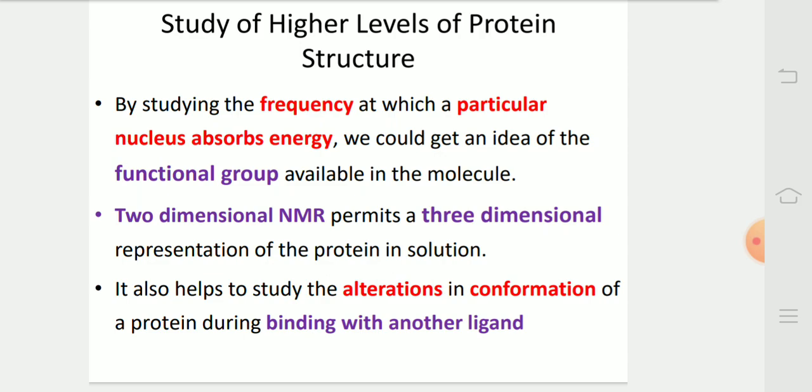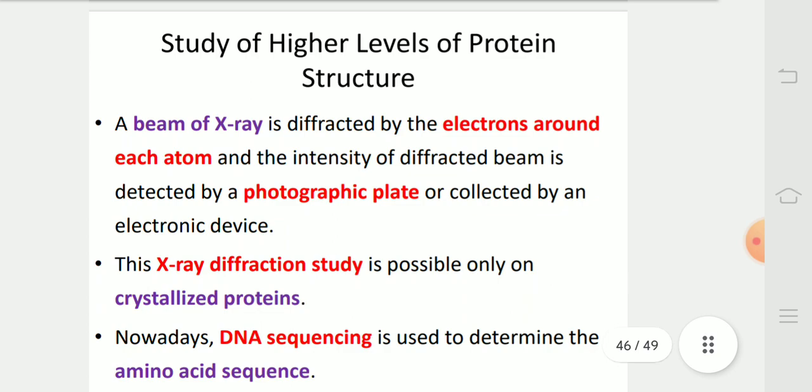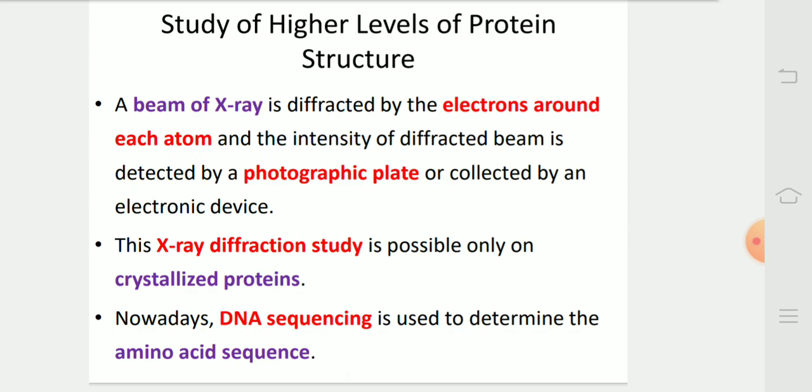By studying the frequency at which a particular nucleus absorbs energy, we could get an idea of the functional group available in the molecule. Two-dimensional NMR permits a three-dimensional representation of the protein in solution. It also helps to study the alterations in conformation of a protein during binding with another ligand. A beam of X-ray is diffracted by the electrons around each atom and the intensity of the diffracted beam is detected by photographic plate or detected in bio-mode. This X-ray diffraction study is possible on crystallized proteins.